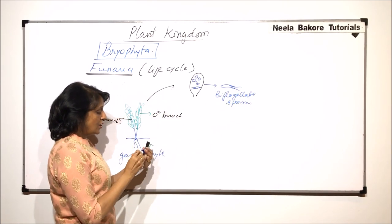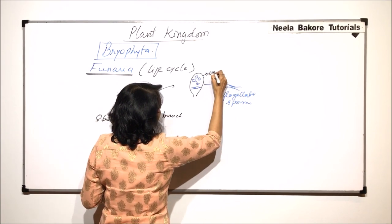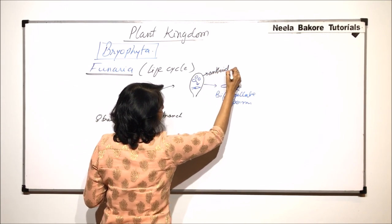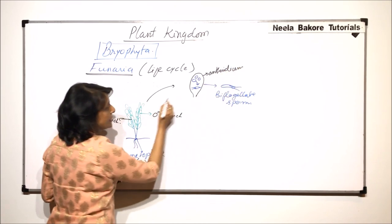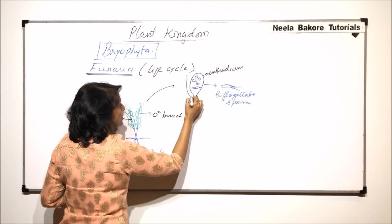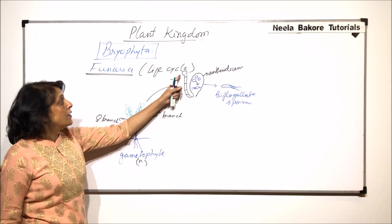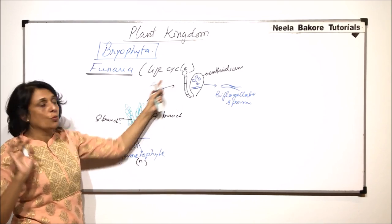And this structure which we see here is the antheridia. And this is on the male head. And we have seen that there are structures which are called the paraphysis which are multicellular with the topmost cell swollen.